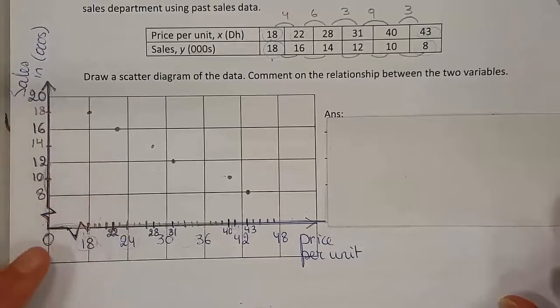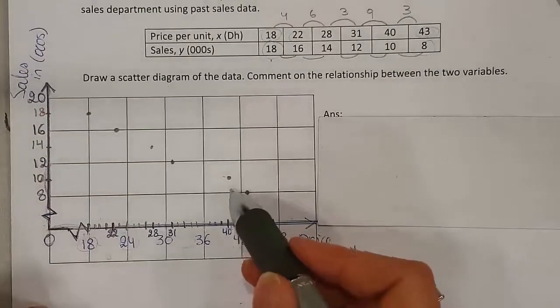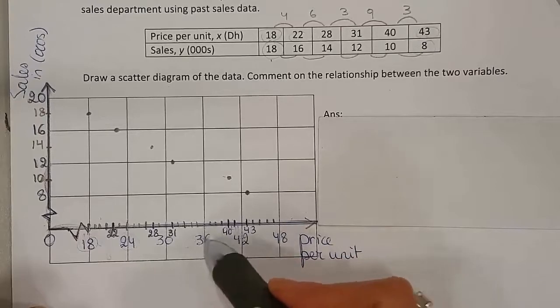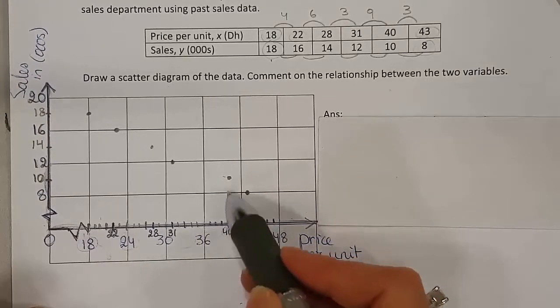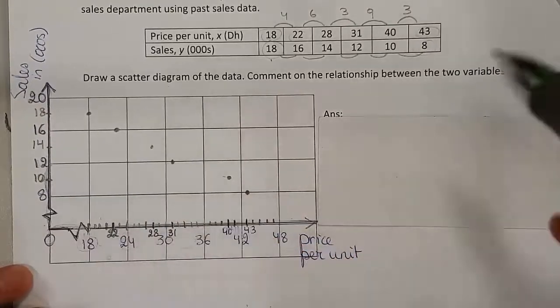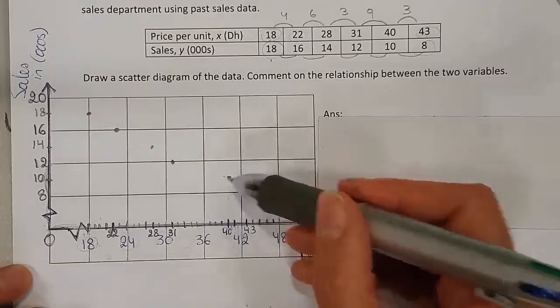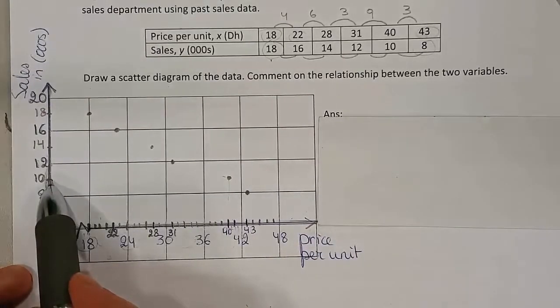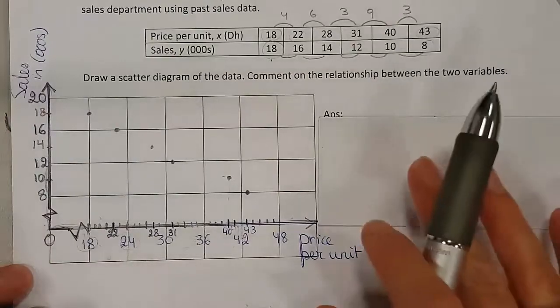So here's the completed graph. Make sure to always write down the numbers in between your big interval. So if you're using 40 together with 10, you have to indicate that in the graph. That way you can easily read it afterwards as well.